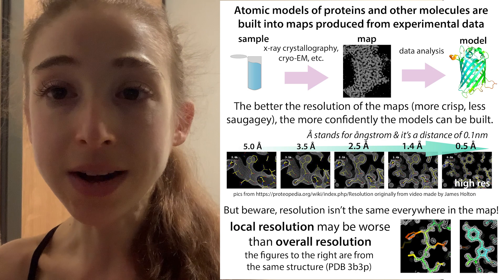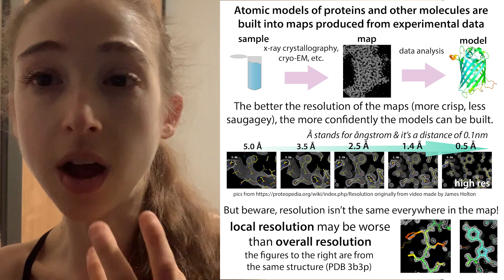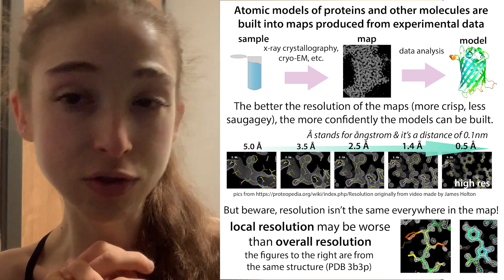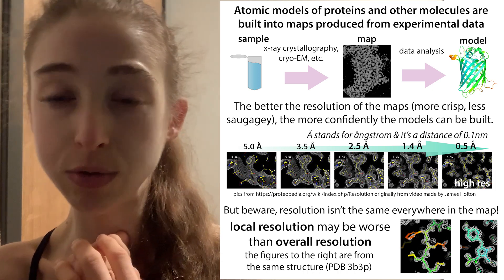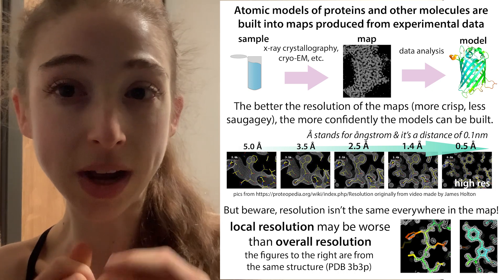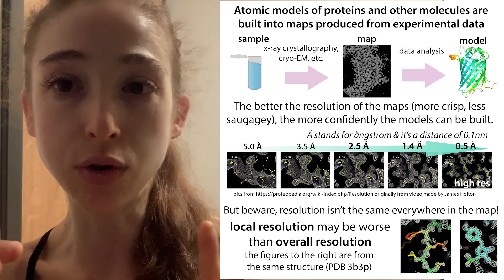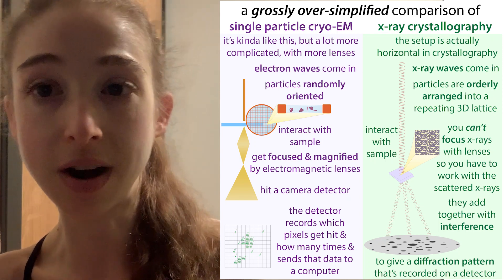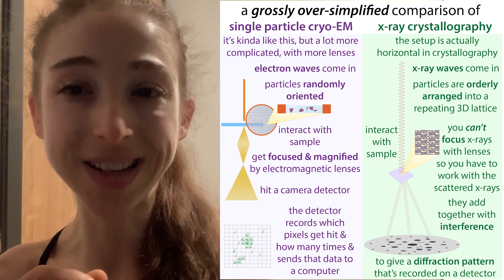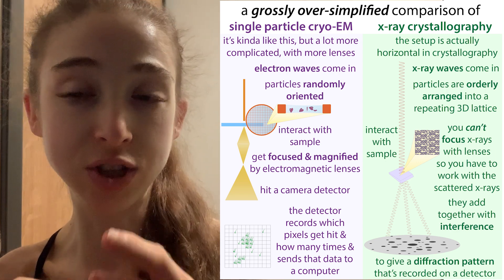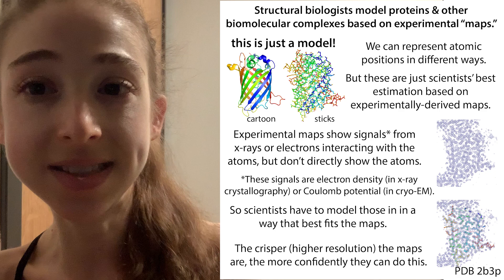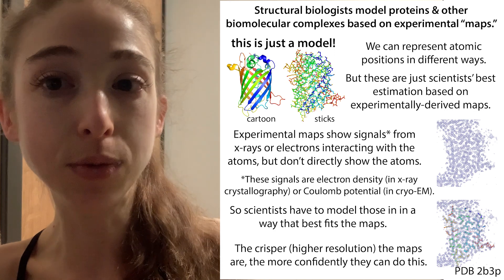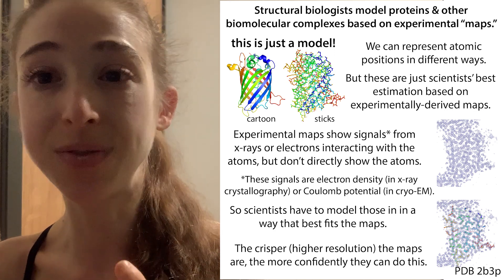Why does this matter? When you collect structural biology data — whether from X-ray crystallography or cryo-EM — you don't directly get the location of the atoms. You get a signal from those atoms as they interact with X-rays or electrons, and that signal gives you a map, which is kind of like a meshy thing. Scientists then have to place the atomic model into that map in a way that best fits the data.